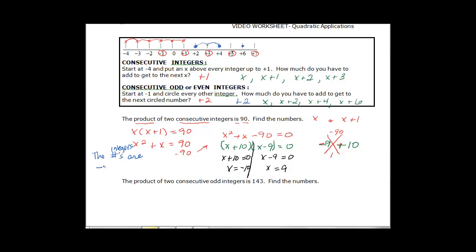The integers are negative 10 and if I add 1 to that X plus 1 or negative 10 plus 1 would be negative 9. Or they are 9 and if I take X plus 1 then that would be equal to 9 plus 1 or 10. So my numbers are either negative 10 and negative 9 or positive 9 and positive 10.